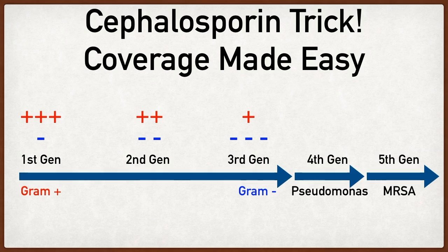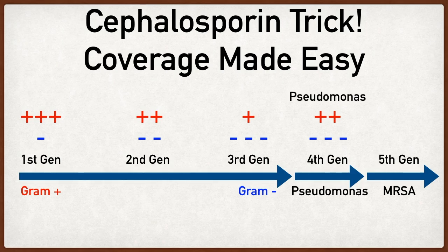Now let's move on to the second arrow, which represents fourth generation medications. The gram negative coverage is still really good, and the gram positive coverage is slightly better as well. But one of the key differences with fourth generation drugs such as cefepime is that they also cover for pseudomonas — that's why the second arrow is labeled that way. It's worth noting that ceftazidime, a third generation medication, also covers for pseudomonas.